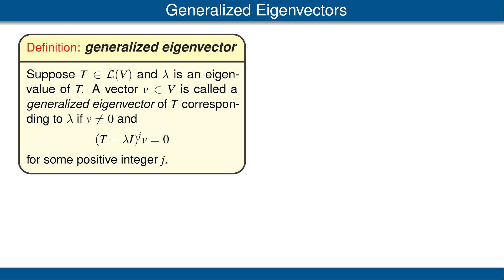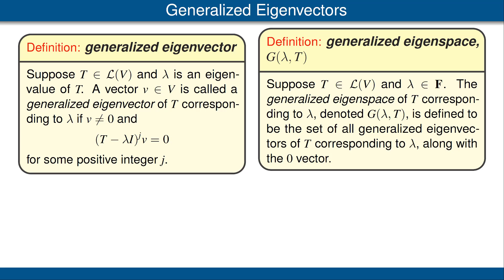Now we are ready for a new definition. Suppose t is an operator on v and lambda is an eigenvalue of t. A vector v is called a generalized eigenvector of t corresponding to lambda if v is not 0, and t minus lambda i raised to the jth power applied to v is equal to 0 for some positive integer j. Thus, for example, if it works for j equals 1, then v is an eigenvector of t, and that's why we call this a generalized eigenvector. The generalized eigenspace, denoted g of lambda t, is defined to be the set of generalized eigenvectors of t corresponding to lambda along with the 0 vector, so that we get a subspace. We use the letter g to remind you of generalized eigenvectors.